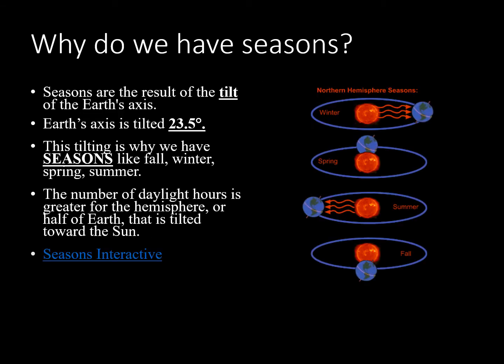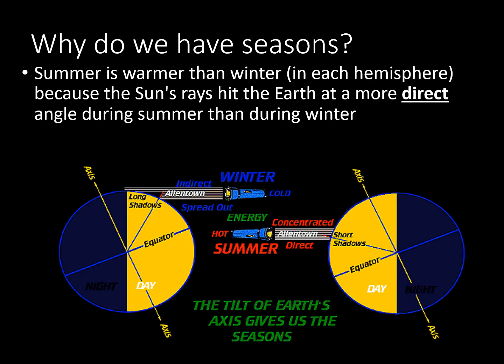Seasons are the result of the tilt of the earth's axis. Earth's axis is tilted 23.5 degrees. This tilting is why we have seasons like fall, winter, spring, and summer. The number of daylight hours is greater for the hemisphere tilted toward the sun. Summer is warmer than winter because the sun's rays hit the earth at a more direct angle during summer than during winter.